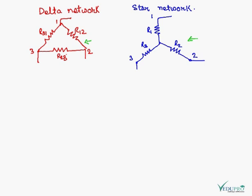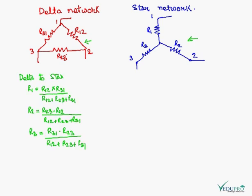To solve electrical networks or to find out the equivalent voltage or current through the network, we need to solve the complex networks. At that time, we need to transfer a delta network into star network or vice versa.